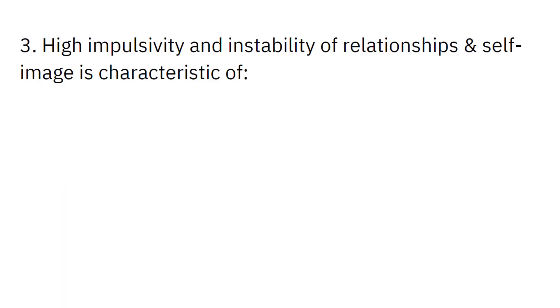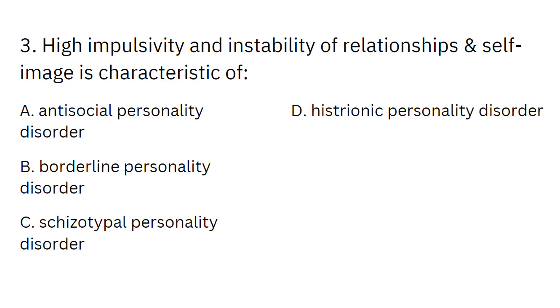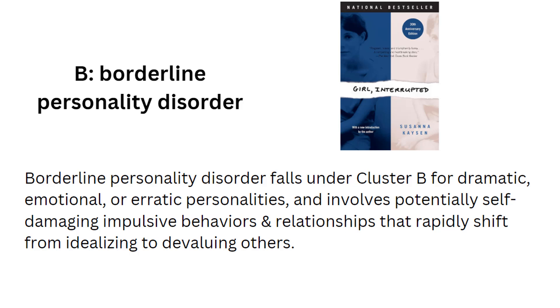High impulsivity and instability of relationships and self-image is characteristic of: antisocial personality disorder, borderline personality disorder, schizotypal personality disorder, histrionic personality disorder, psychopathy. And this would be B, borderline personality disorder. Borderline personality disorder falls under cluster B for dramatic, emotional, or erratic personalities, and it involves potentially self-damaging impulsive behaviors and relationships that rapidly shift from idealizing to devaluing others.